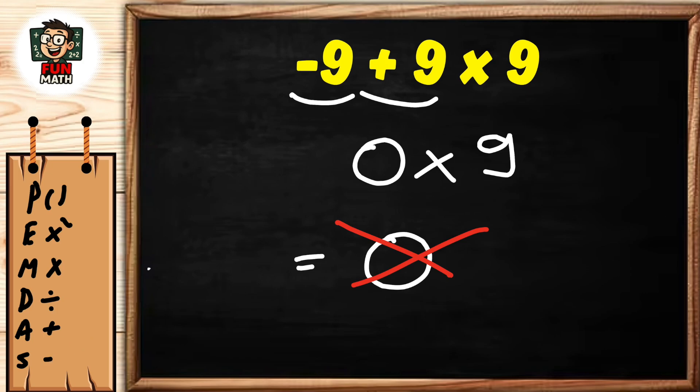There's an additional rule here. Multiplication and division have no order. They are solved from left to right. Similarly, addition and subtraction have no order. They are solved from left to right.